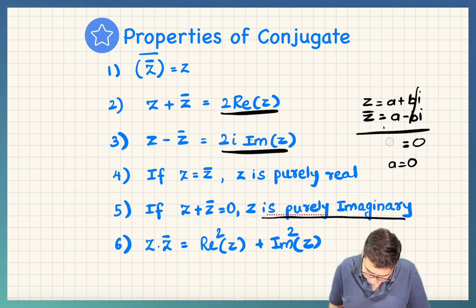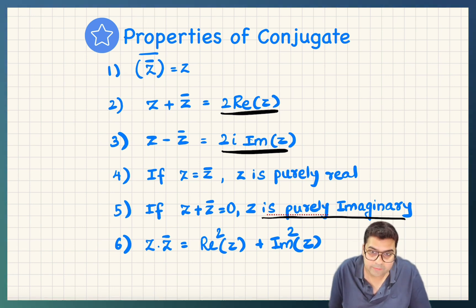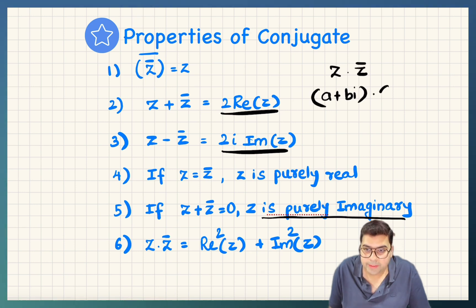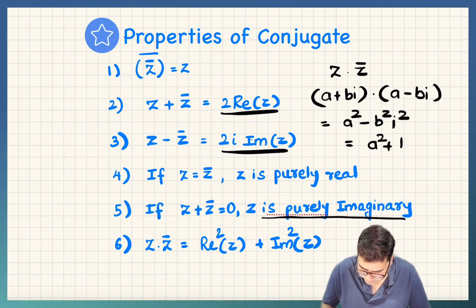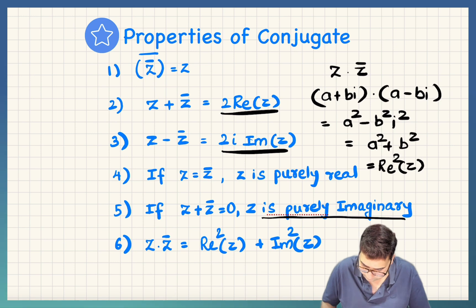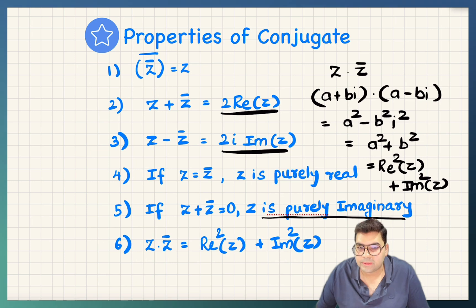The last property: z times z-bar equals Re(z)² plus Im(z)². If z is a plus bi and z-bar is a minus bi, applying (a plus b)(a minus b) gives a squared minus b squared i squared. Since i squared is minus 1, the result is a squared plus b squared — which is the real part squared plus the imaginary part squared. That is the end of this module. I will see you all in the next part. Thank you so much.